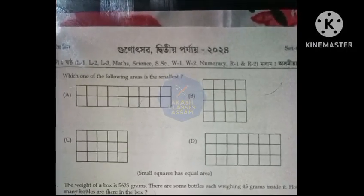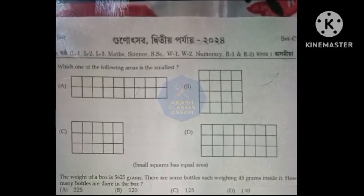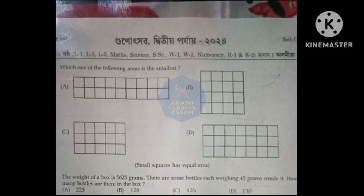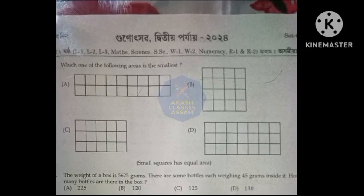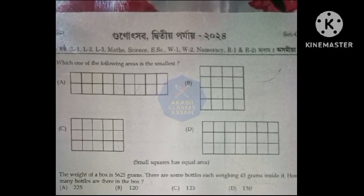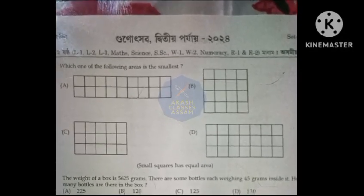Which one of the following areas is the smallest? Option C. The weight of a box is 5625 grams. There are some bottles each weighing 45 grams inside it. How many bottles are there in the box? Option C, 125.